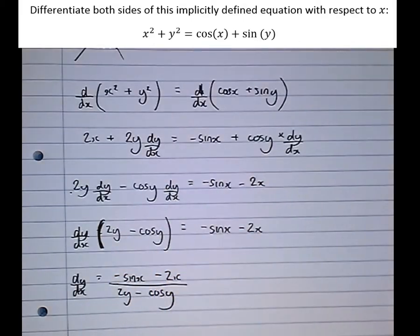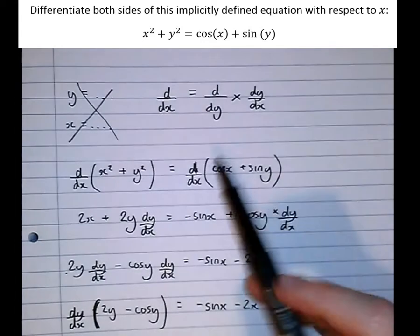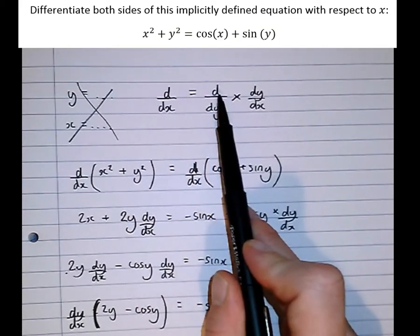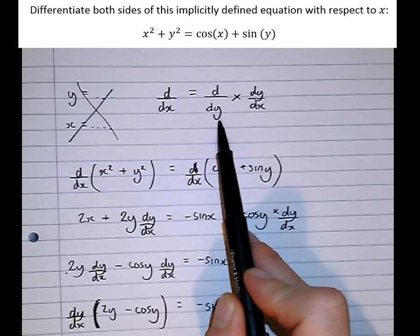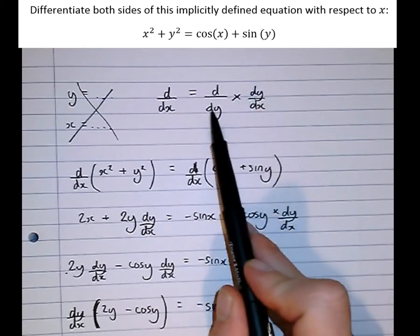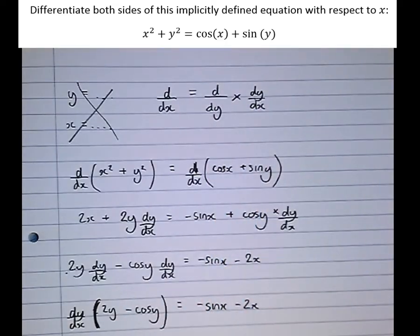And that's how to implicitly differentiate. The key point here is, instead of differentiating with respect to x, when we get a y term, the equivalent operation is differentiating with respect to y, then multiplying the result by dy/dx. Again, the reason this works is because the dy's cancel to give d/dx, so the two are exactly equivalent.